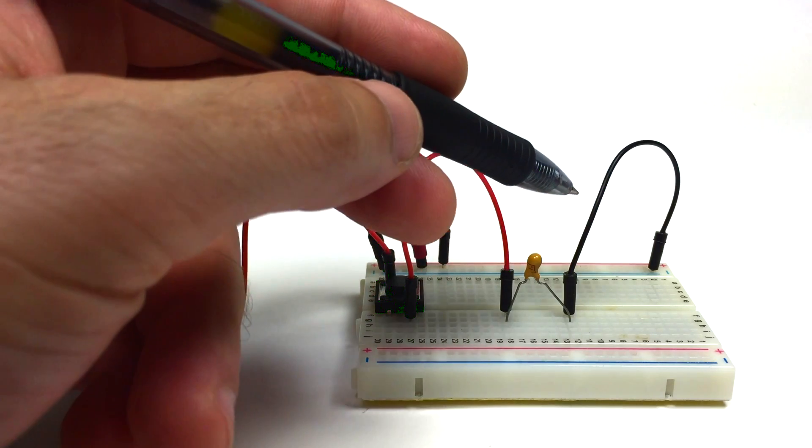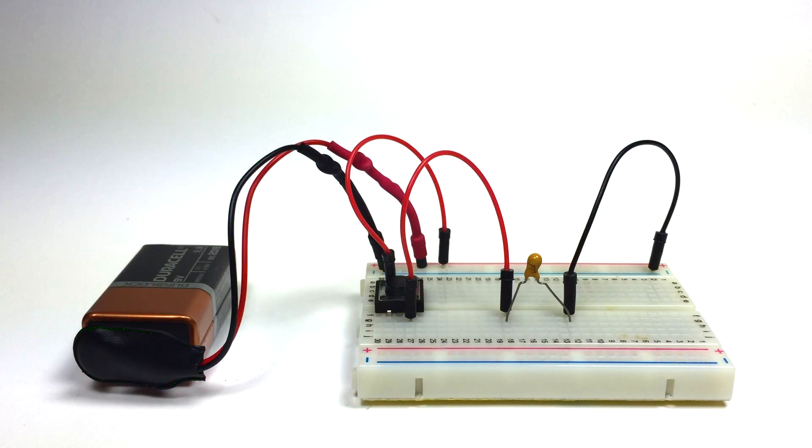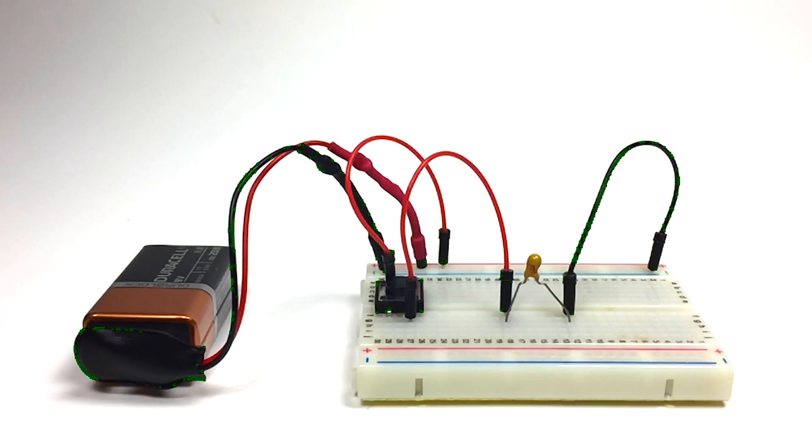And then the other side of the tantalum capacitor, I have another jumper wire connecting to the negative. So when I press the push button, current's going to flow through the tantalum capacitor, but the tantalum capacitor is connected the wrong way. So let's see what happens.